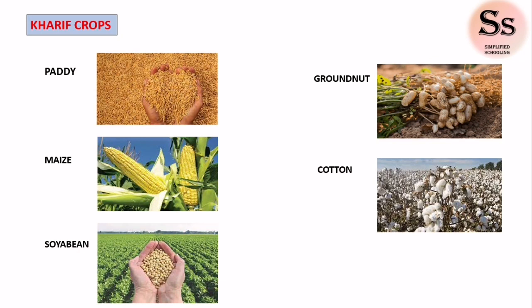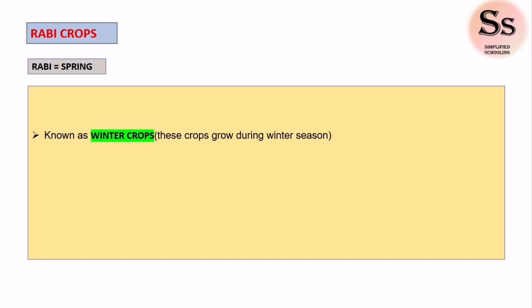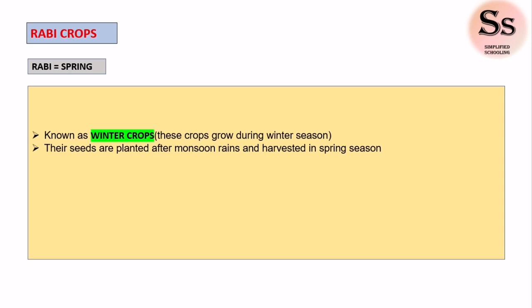Now let's have a look at Rabi crops. The Arabic term Rabi denotes spring, hence the harvesting time for Rabi crops begins during the spring season. Rabi crops are also known as winter crops because they grow during the winter season. These crops are cultivated in winter and harvested in the spring season. The seeds of Rabi crops are planted mainly after the monsoon rains are over, and harvesting begins in April or May, that is in the spring season.